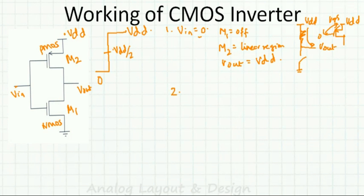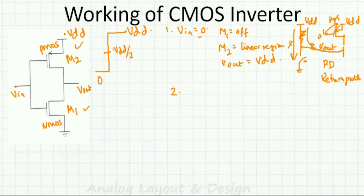Now, how much current flows in this condition? For current to flow there must be a potential difference and a return path. Current cannot flow from VDD to ground because there is no closed path — there is an open circuit. Current also cannot flow from VIN to VOUT because VOUT is connected to a gate of another MOS transistor, and no current flows through a gate. So the current flowing is zero.